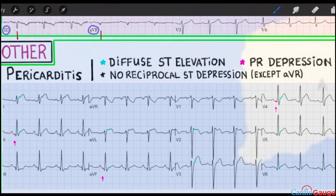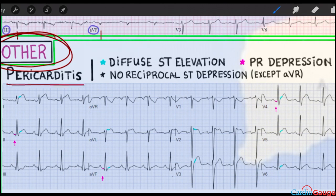That's it for level one infarct. On to all the other stuff — pericarditis. The hallmark of pericarditis is diffuse ST elevation. There tends to be no reciprocal ST depression,